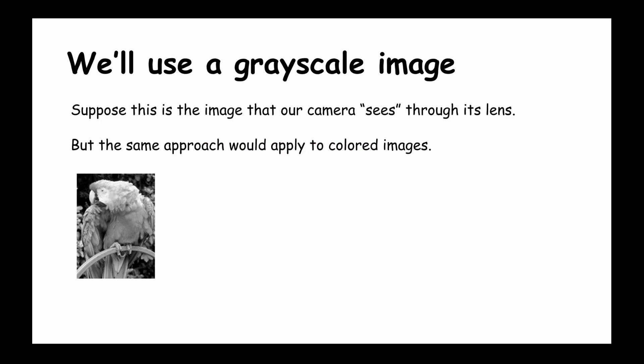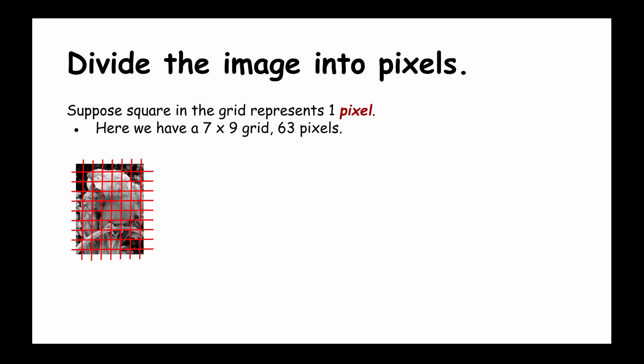Suppose the image that our camera sees through its lens is this grayscale image of a parrot. The same algorithm and approach would apply for colored images. We're just going to simplify it by using grayscale. Suppose we place a grid over the image. You can think of the little squares there as the pixel elements in the chip that is sensing the light waves coming in through the camera lens. So here we have a 7 by 9, or a 63 pixel chip.